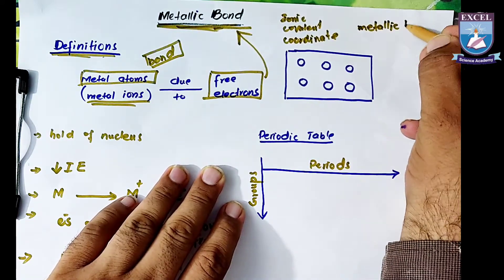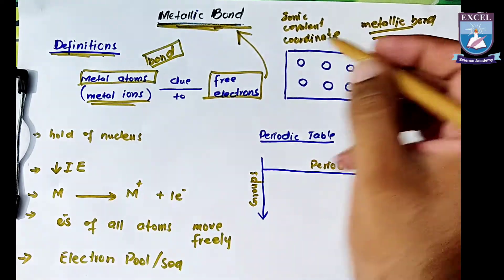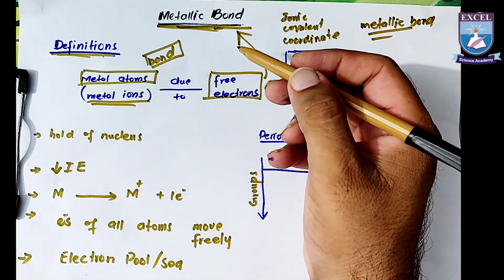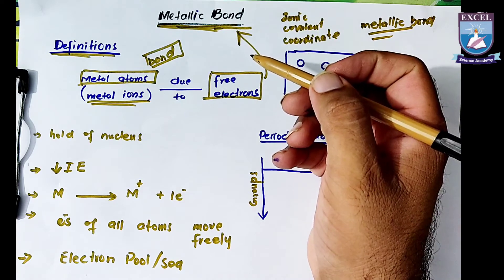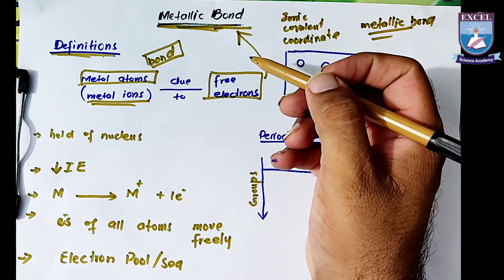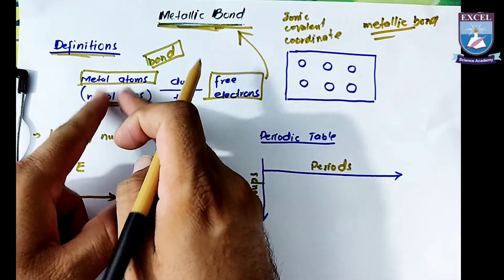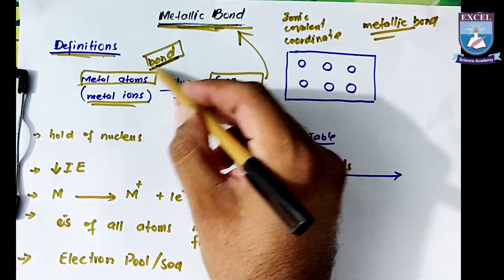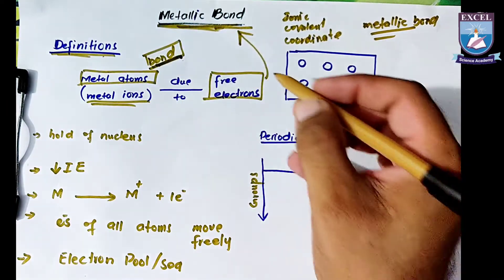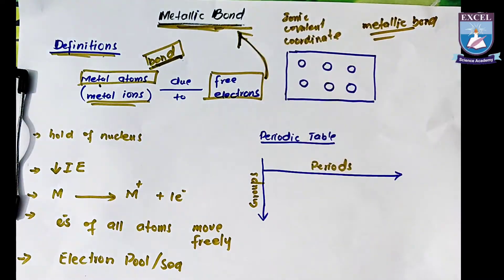A bond is simply a force of attraction due to which atoms remain bonded and joined together. So how do metal atoms remain bonded and joined together? Due to what force of attraction, due to what bond? That bond is what we are calling a metallic bond.